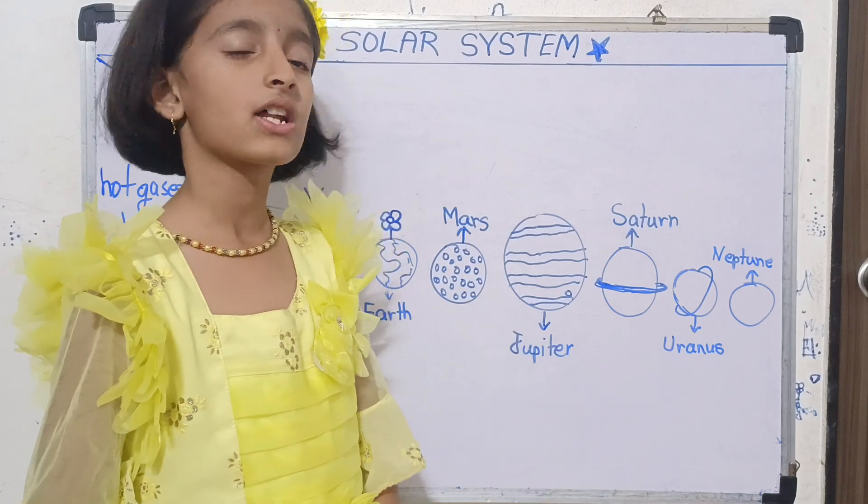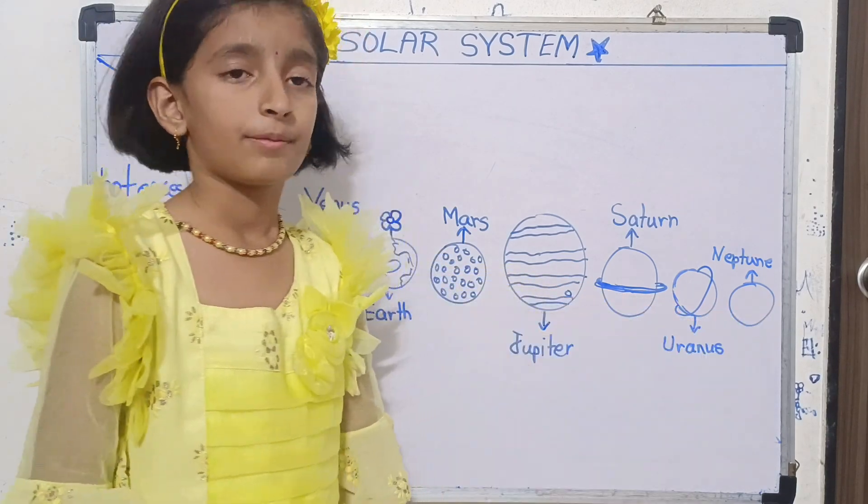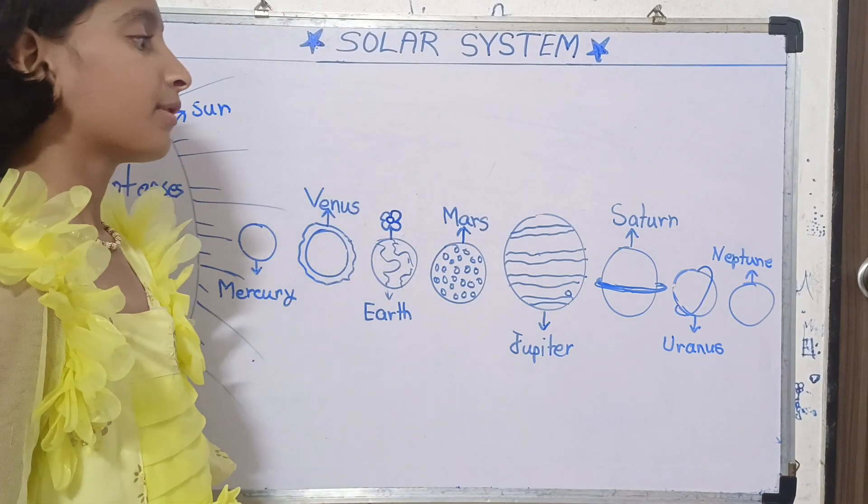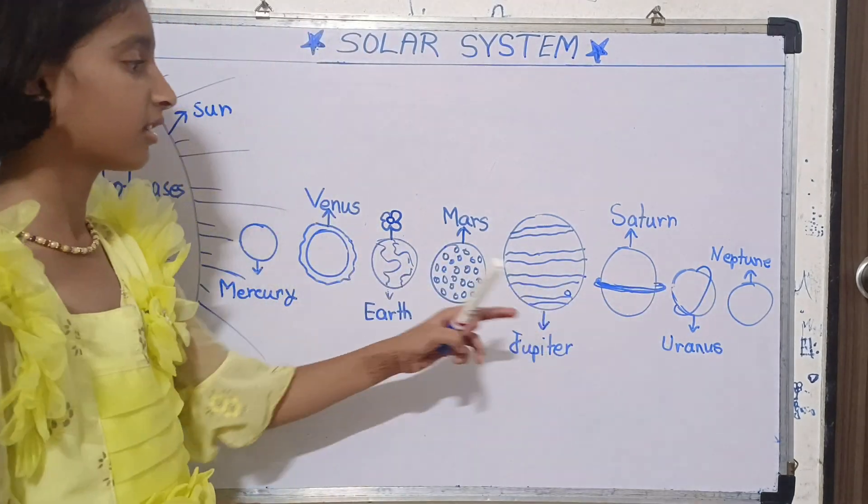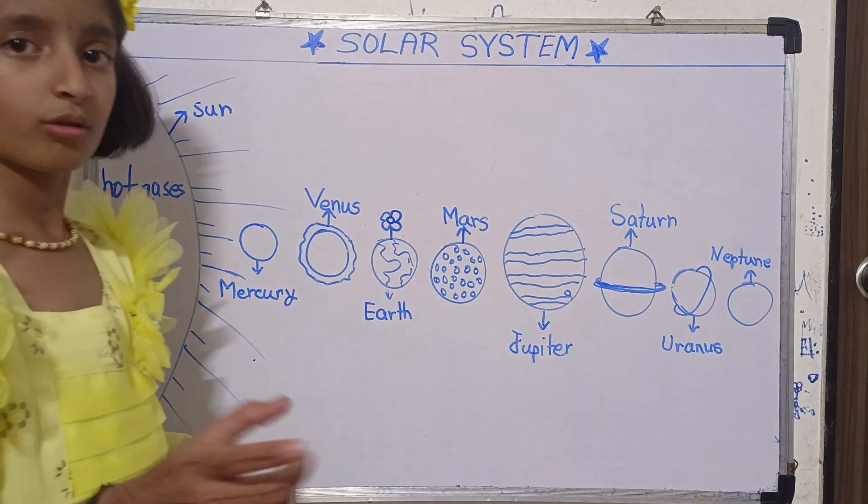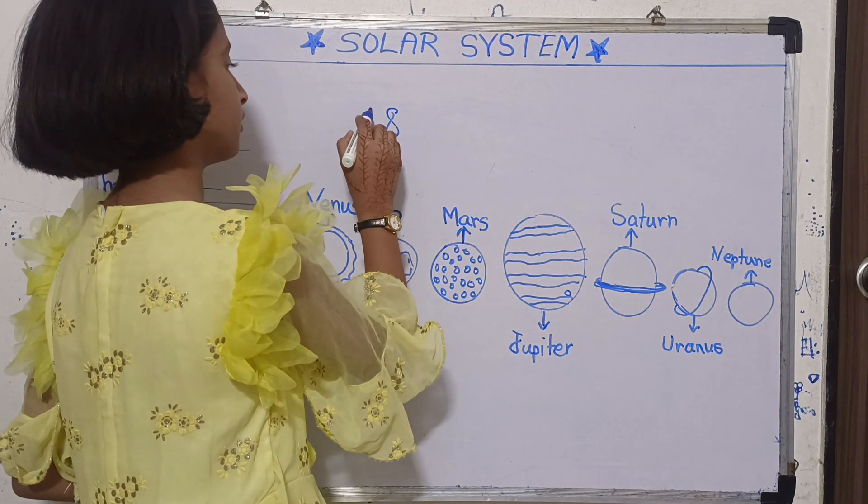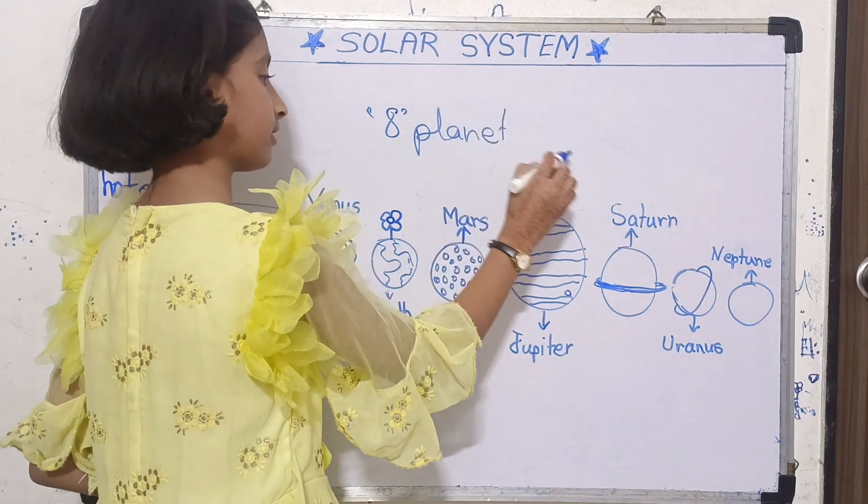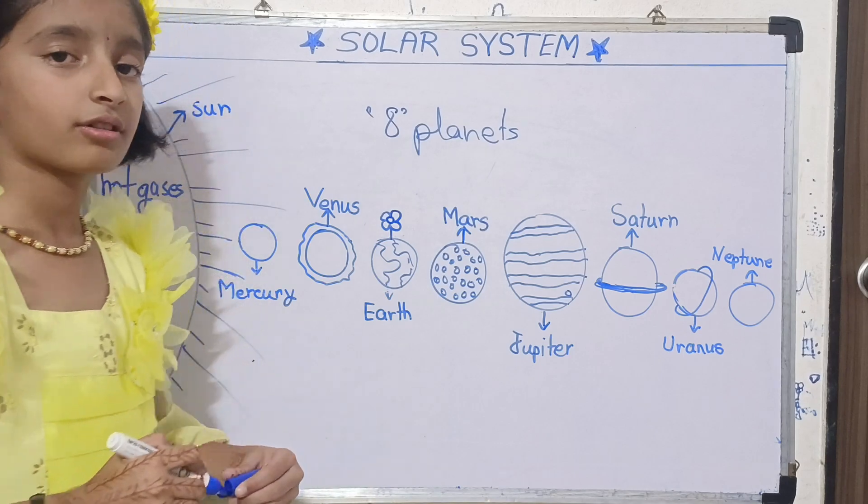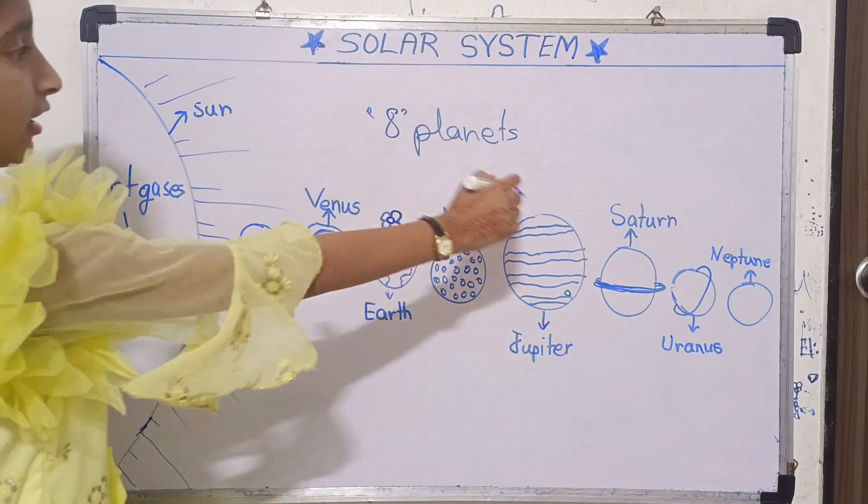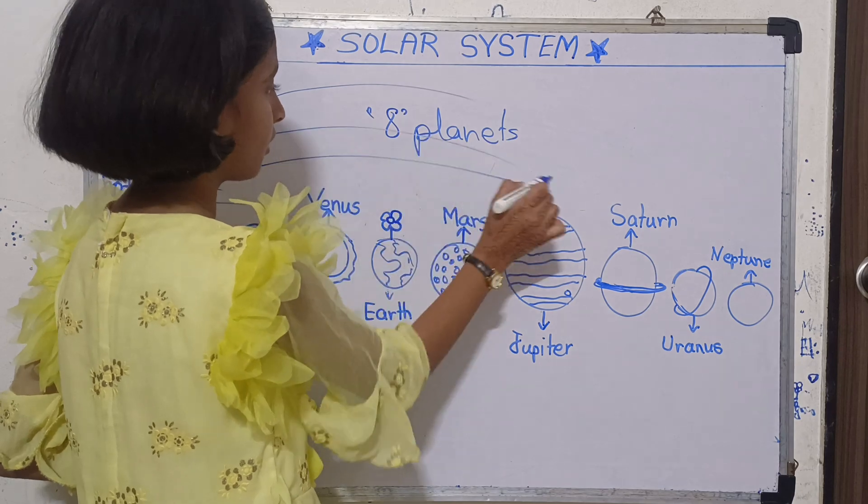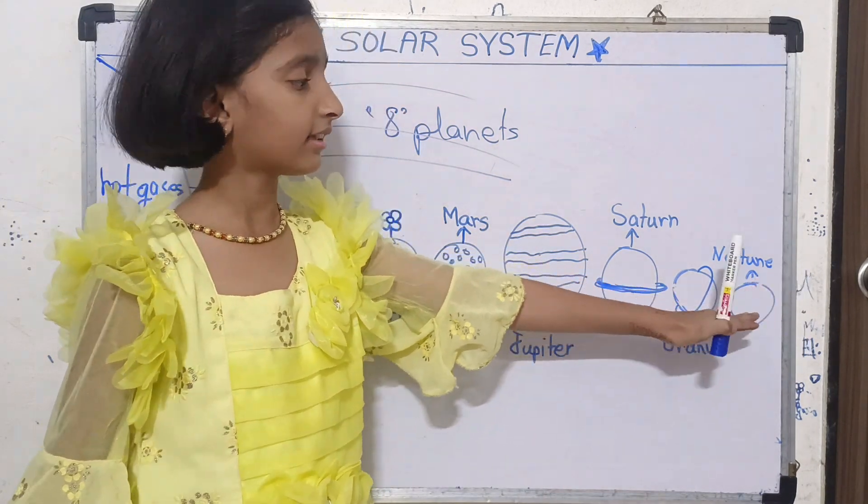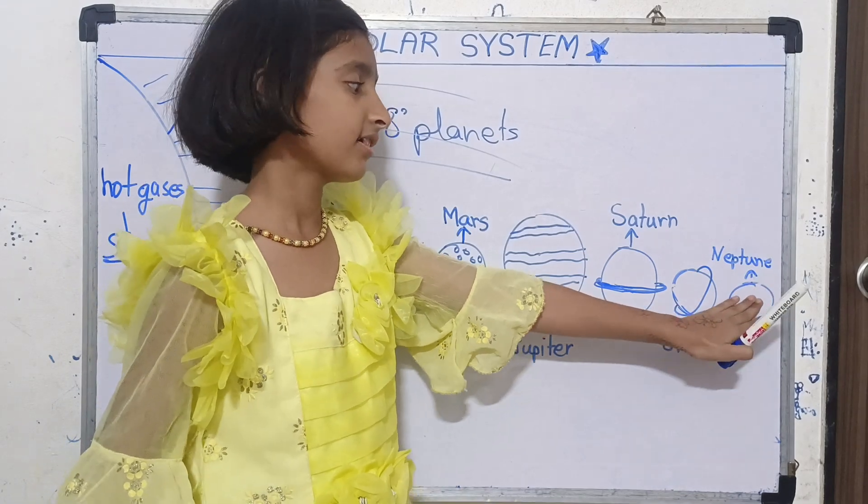Neptune. Neptune is too cold, colder than Uranus, because it is the last planet from the Sun. There are a total of eight planets. Because it is the last planet, the Sun's rays cannot reach it well. Because of this, Neptune is too cold at daytime and at nighttime also.